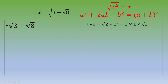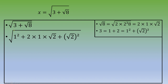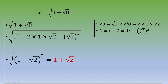Now let's take care of the 3. The value 3 can be written as 1 plus 2 times square root of 2, which is 1 squared plus 2 times 1 times square root of 2 plus (square root of 2) squared. We can plug this under the root to get the square root of 1 squared plus 2 times 1 times square root of 2 plus (square root of 2) squared.